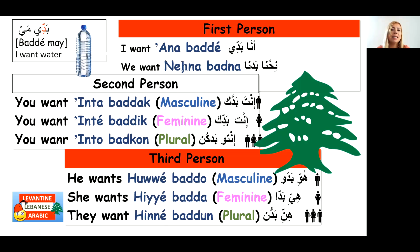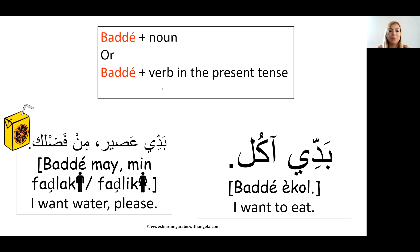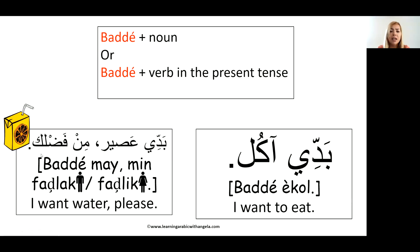For example, 'baddi may' means 'I want water.' You can use 'baddi' plus a noun — 'baddi may' — or you can use 'baddi' plus a verb in the present tense, like 'I want to eat': 'baddi aekel.' That's with a verb. 'Baddi asir' — and obviously we can add 'please' at the end: 'min fadlak,' or 'law samaht,' or 'iza bitreed.'